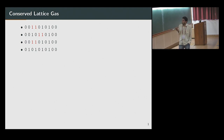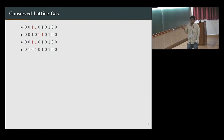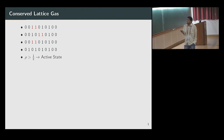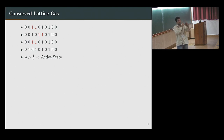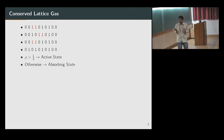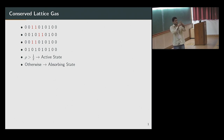So they're all inactive, and there's no more dynamics in this system. This configuration is called an absorbing configuration, because once the system reaches a configuration like that — with just isolated particles — no more dynamics can happen. So when you start with n particles on L sites and your density is greater than half, you will always have some activity, because there will always be some particle next to another.